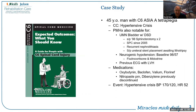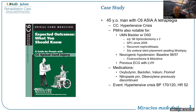I want to start off with a case. This is a 45-year-old gentleman with C6 ASIA Impairment Scale A tetraplegia. The chief complaint is hypertensive crisis. His past medical history was notable for an upper motor neuron bladder with detrusor sphincter dyssynergia. He had sphincterotomies performed twice, and unfortunately they scarred down. Since 2005 he's had a suprapubic catheter. Because of the indwelling catheter, he has developed recurrent stones in the bladder as well as the kidney.